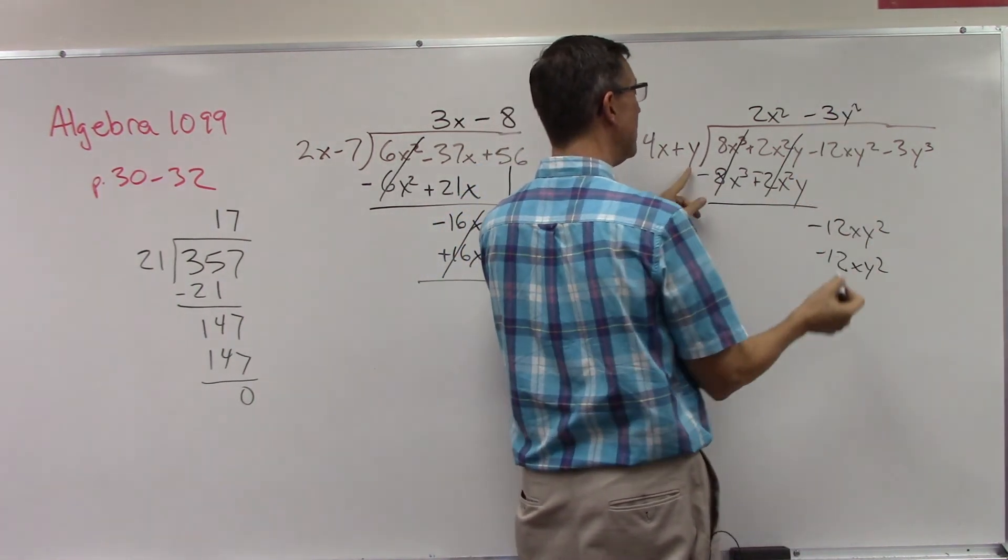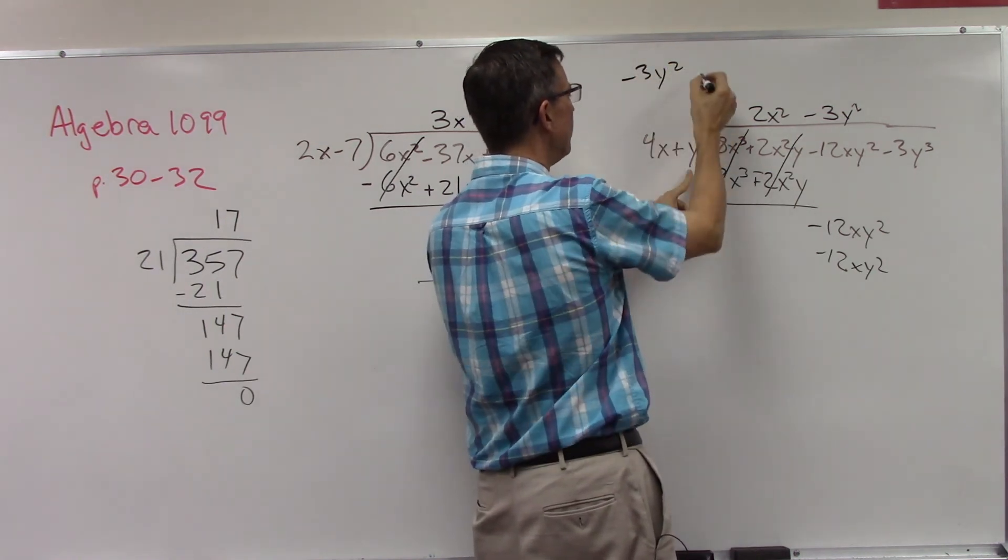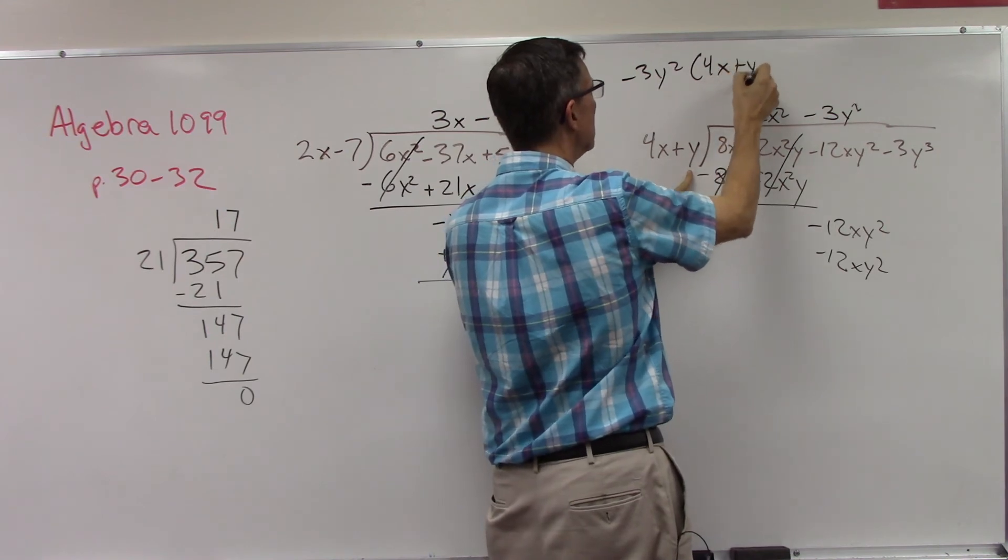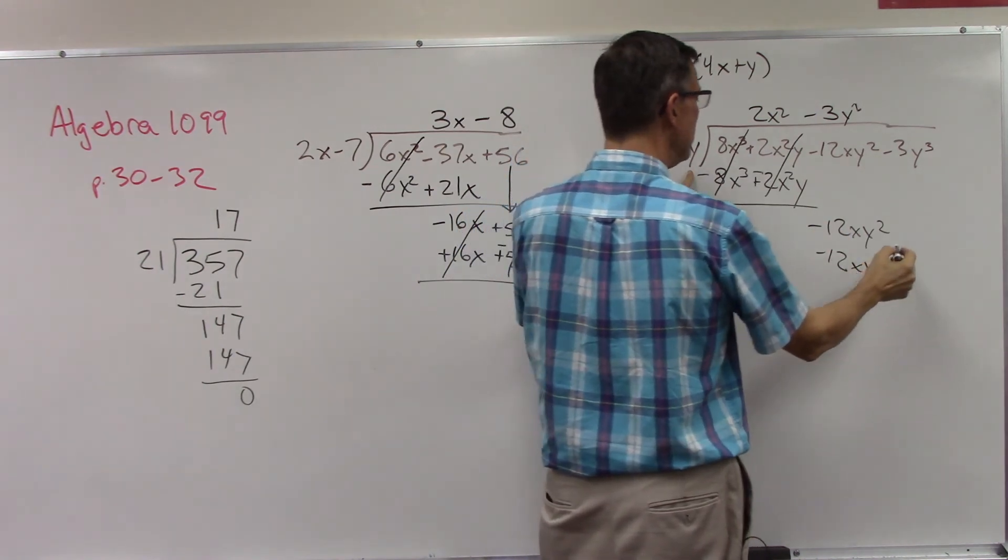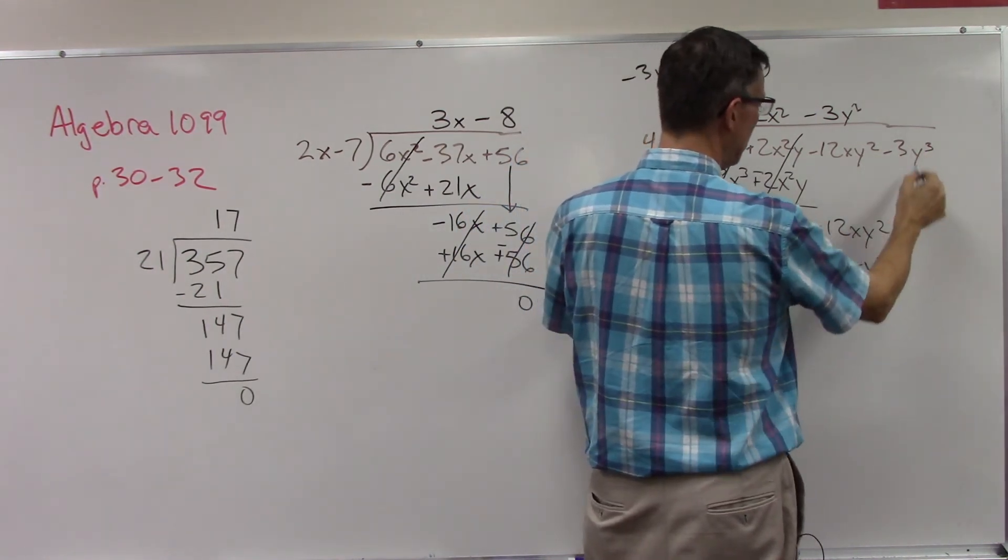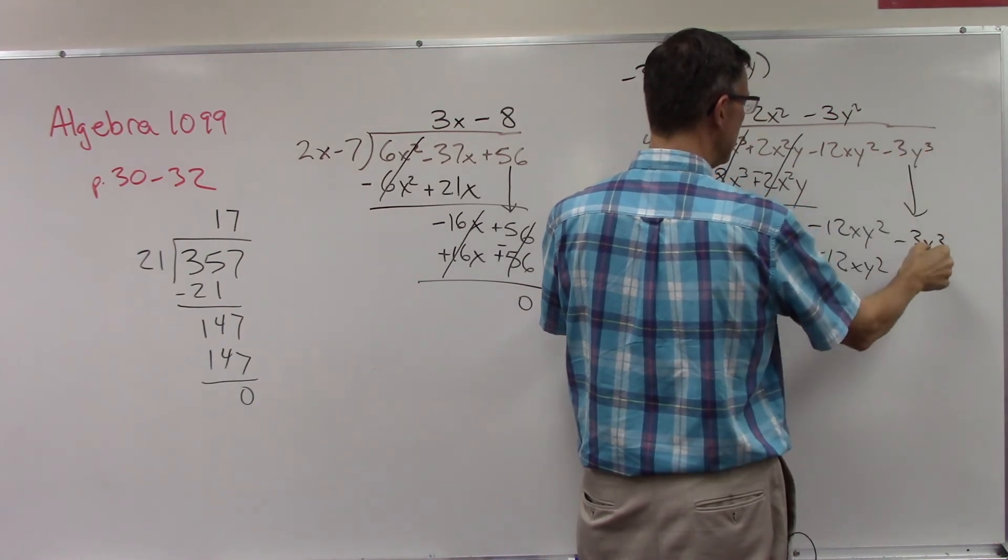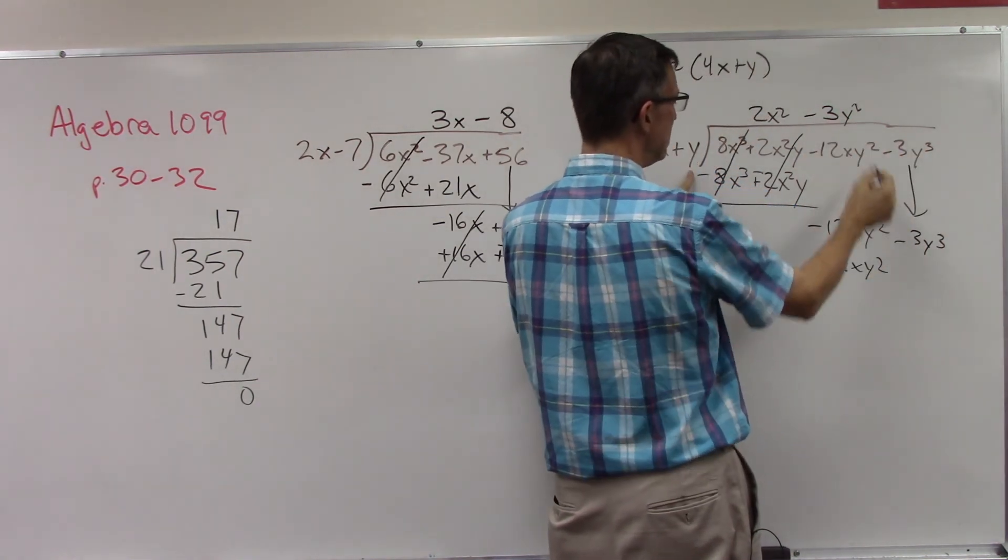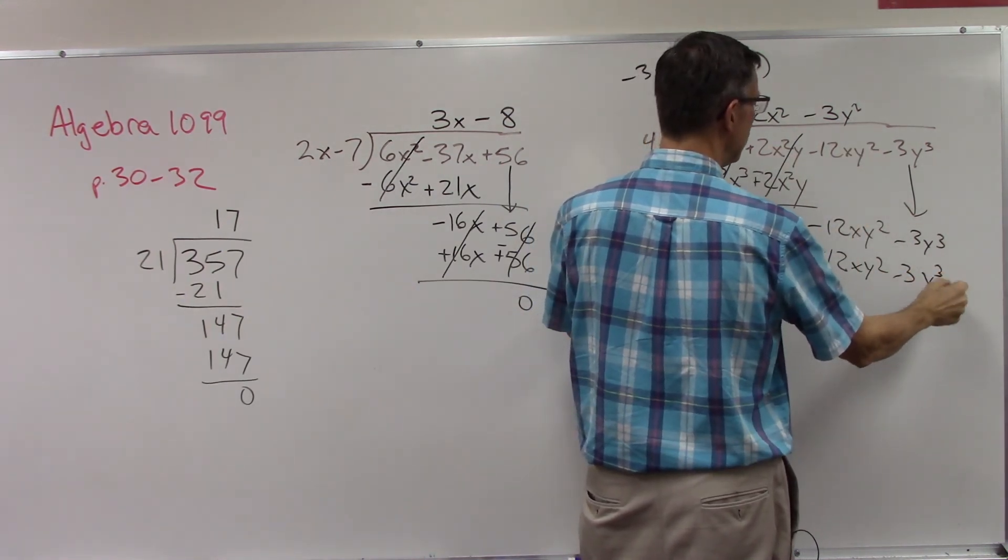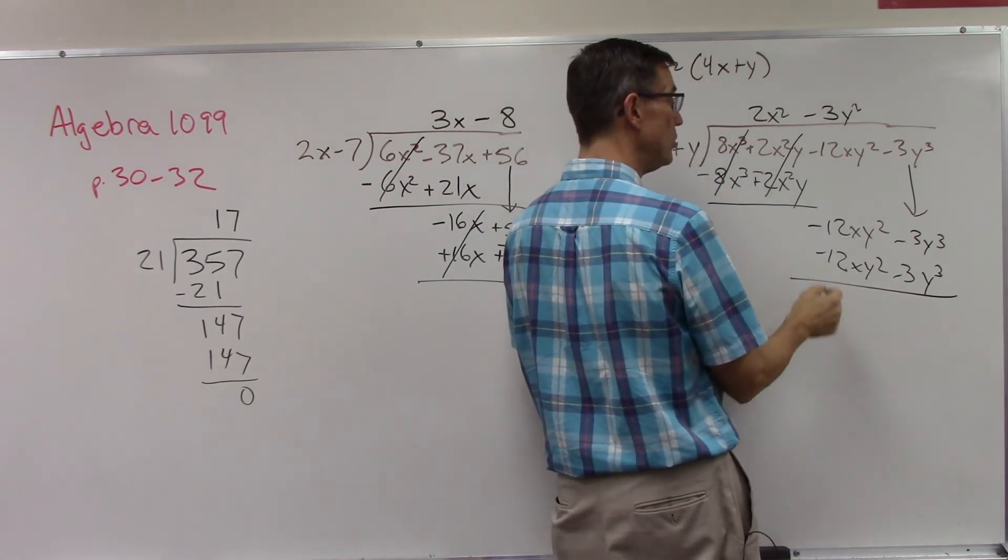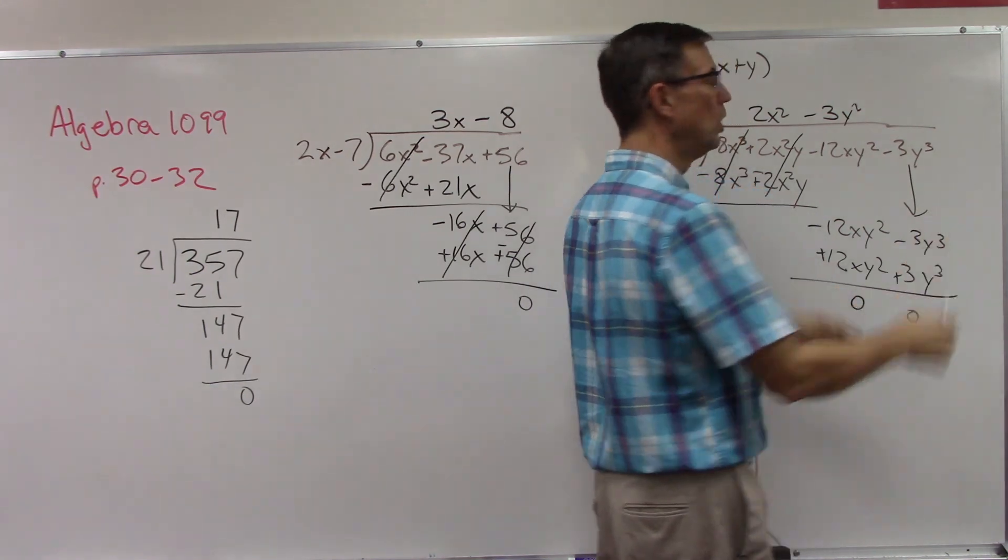Now we're going to take this times the second one. It's kind of like we're doing distributive property, like we're doing negative 3y squared times 4x plus y, and we're distributing. This becomes - by the way I got to bring this down - negative 3y to the third. I just brought that straight down. This becomes negative 3y times y squared which is y to the third. And now change these to their opposites, add, boom it's gone. Yippee!